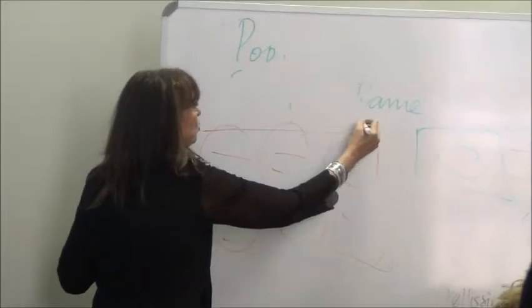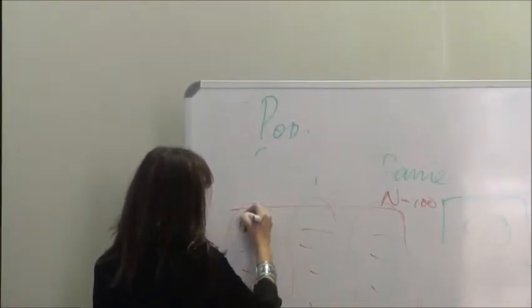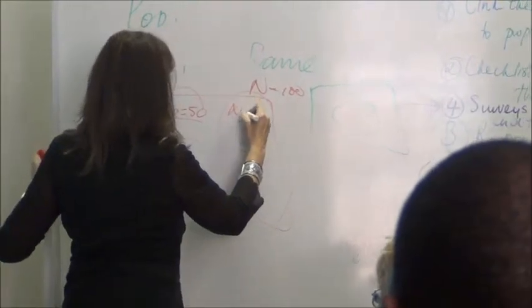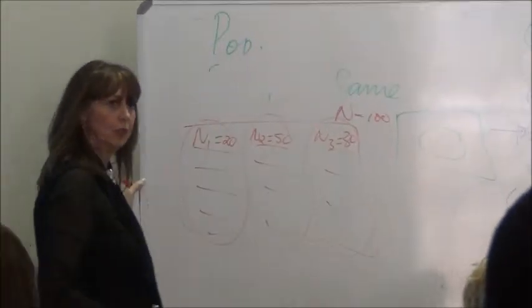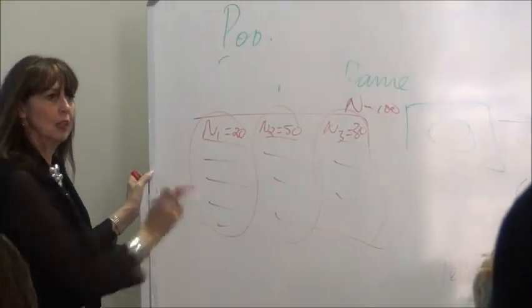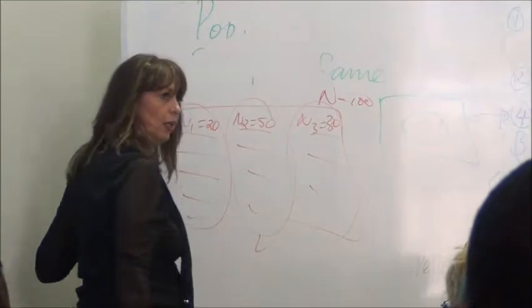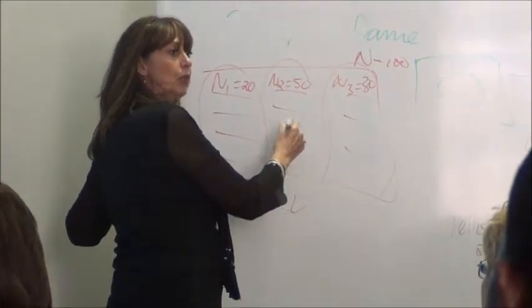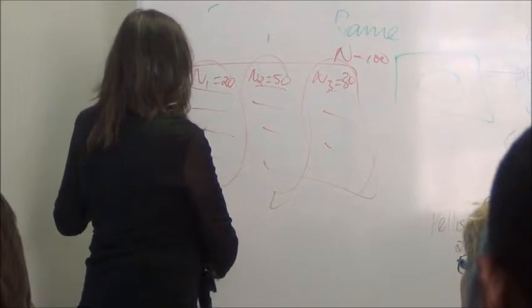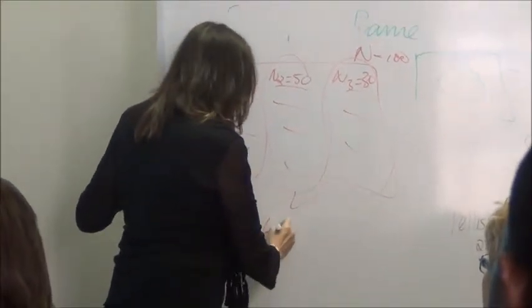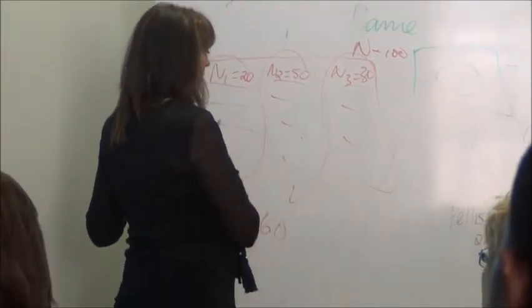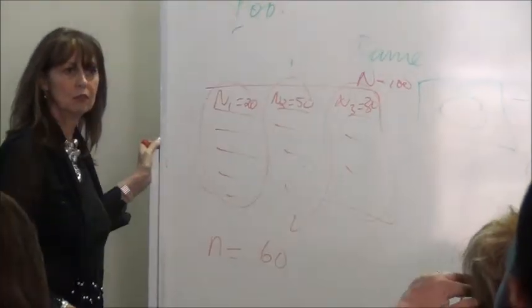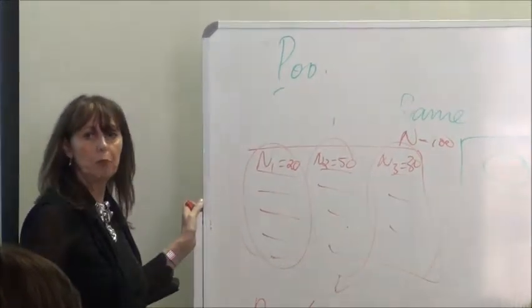For example, if the population has size 100 and it's split into clusters of size 20, 50, and 30 — you randomly choose one of these clusters. You can use all 50 elements in that cluster, or do a random sample within it. If the target sample size is 16, you randomly choose one cluster, then randomly select the remaining elements from another cluster. There's a random element within the cluster sampling methodology.